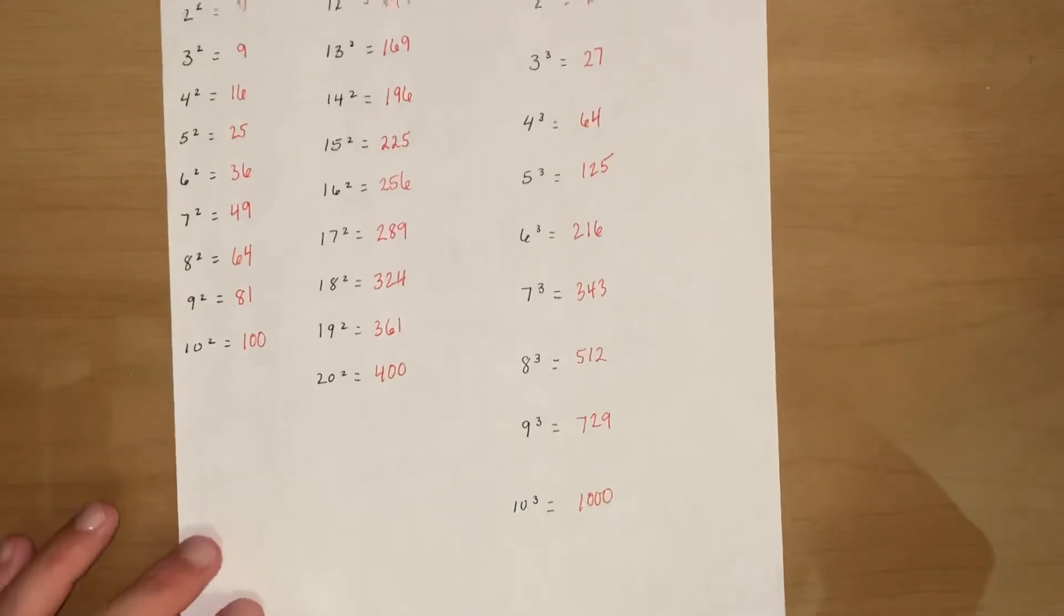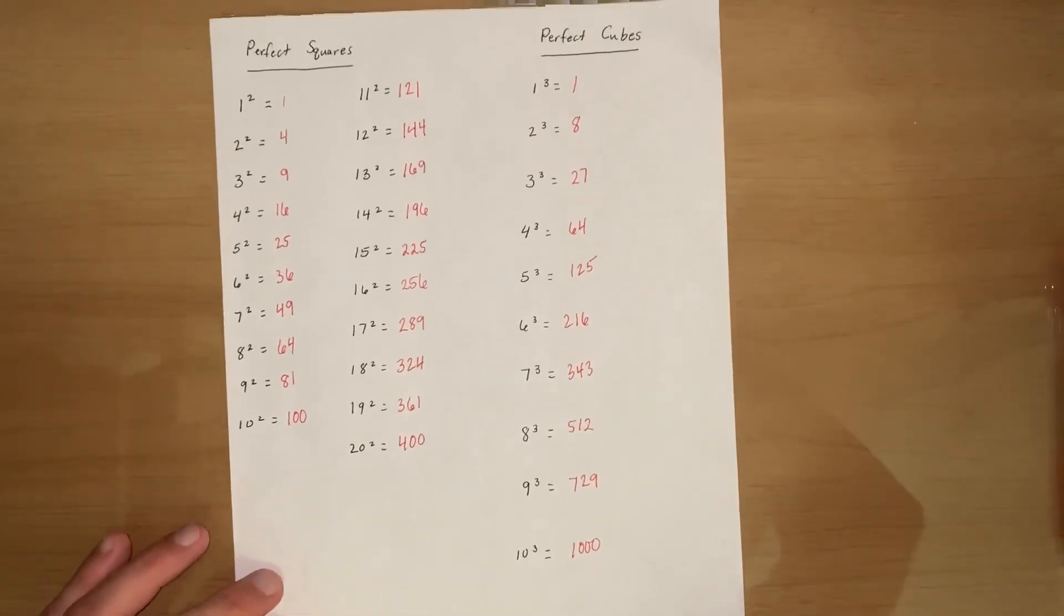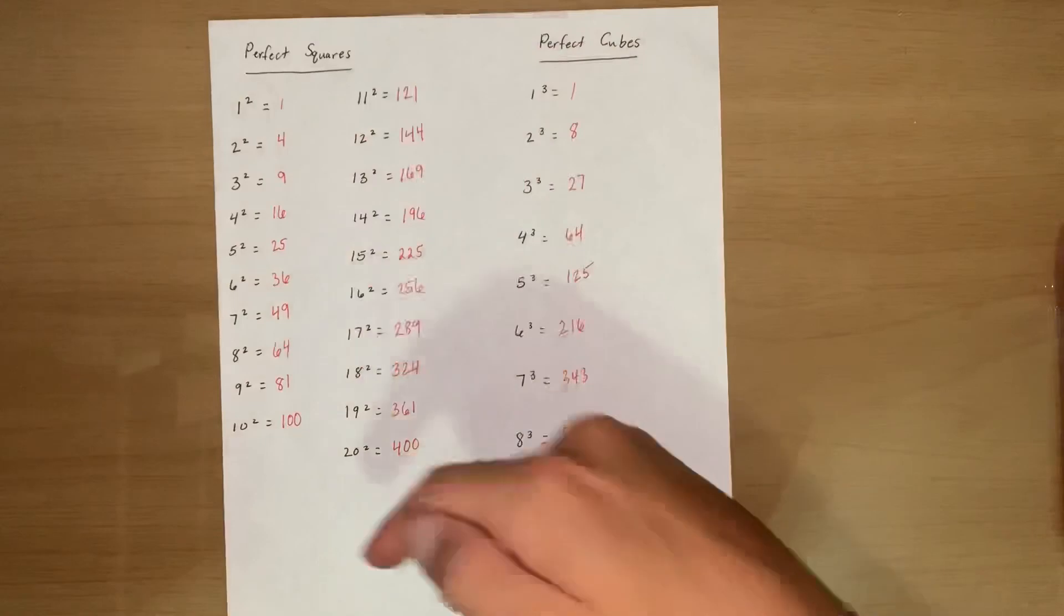So let's zoom out here, you can see all of them. Okay so perfect cubes 1 through 10, perfect squares 1 through 20.